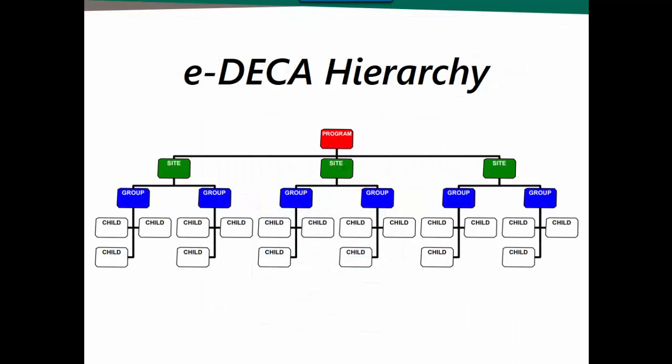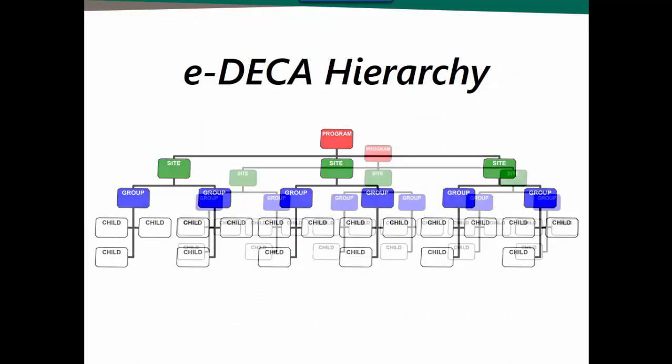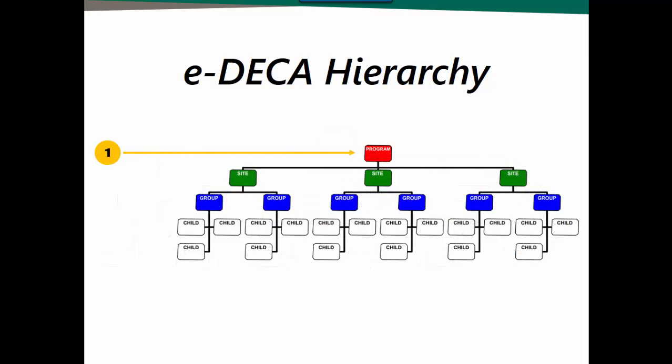As you can see, there is a four-level hierarchy within the EDECA system. The top level is the program, followed by a site or sites, a group or groups, and then children. It is important to understand that no matter how large or small a program is, this hierarchy must be maintained. A program may have multiple sites and multiple groups within each of those sites, where another program may have only one site and only one group.